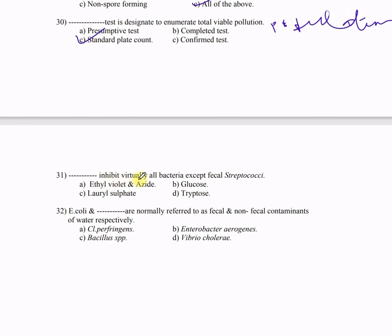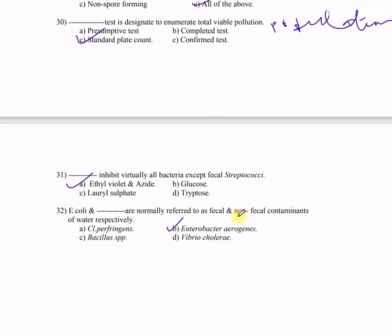Question 31: Dash inhibits virtually all bacteria except fecal streptococci — A) ethyl violet and azide, B) glucose, C) lauryl sulfate, D) tryptose. The correct answer is A — ethyl violet and azide. Question 32: E. coli and dash are normally referred to as fecal and non-fecal contaminants of water respectively — A) Clostridium perfringens, B) Enterobacter aerogenes, C) Bacillus, D) Vibrio. The correct answer is B — Enterobacter aerogenes, as it is not present in feces.